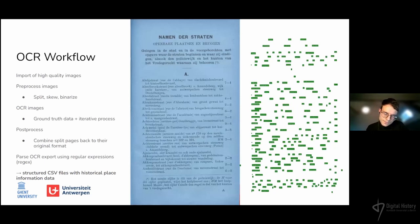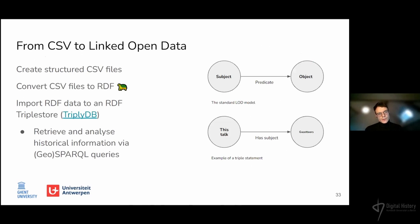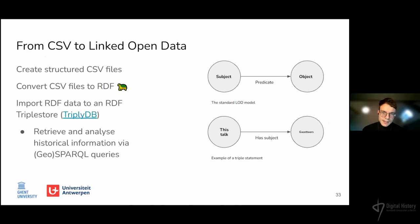Unfortunately, that is not doable for every source, because it depends on whether the information is consistently structured. If it is not the case, it is possible to use a semi-automatic process, but manual correction will need to be done in order to make it into structured data. While the OCR workflow is being evaluated, the gazetteer itself is being tested using a small corpus of datasets about streets in Ghent. Data from these CSVs are mapped to the data model and converted to RDF in order to import the data into a triple store.